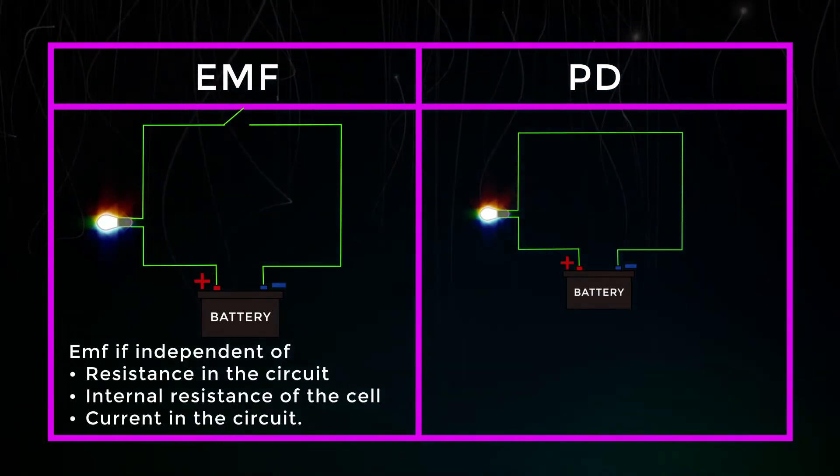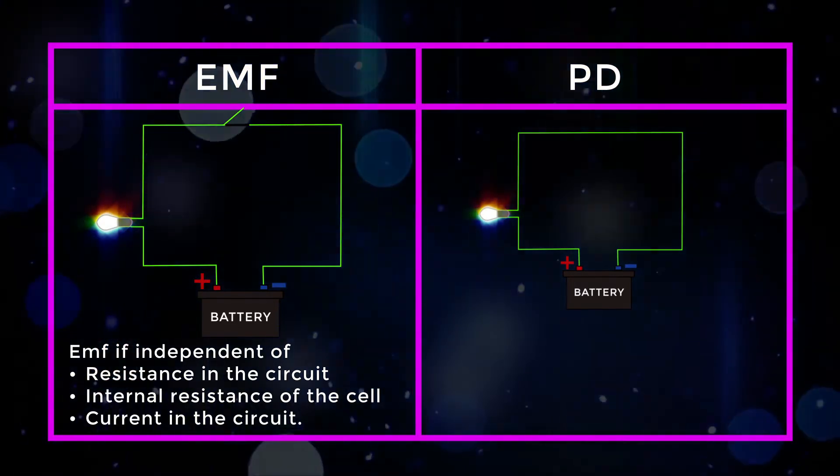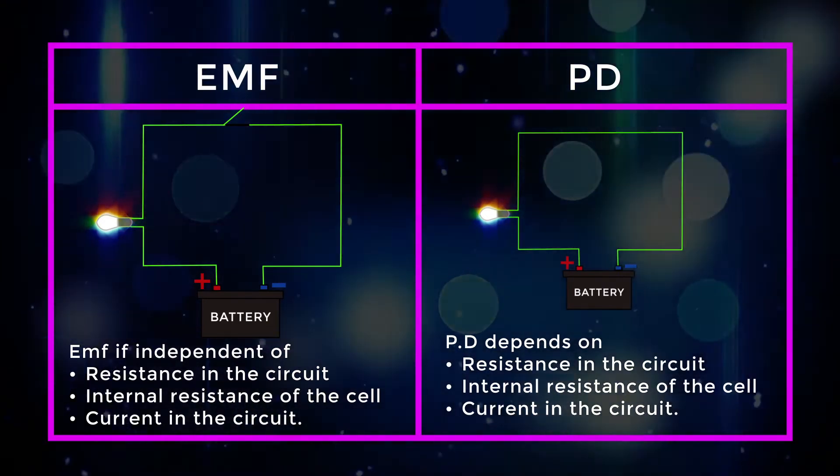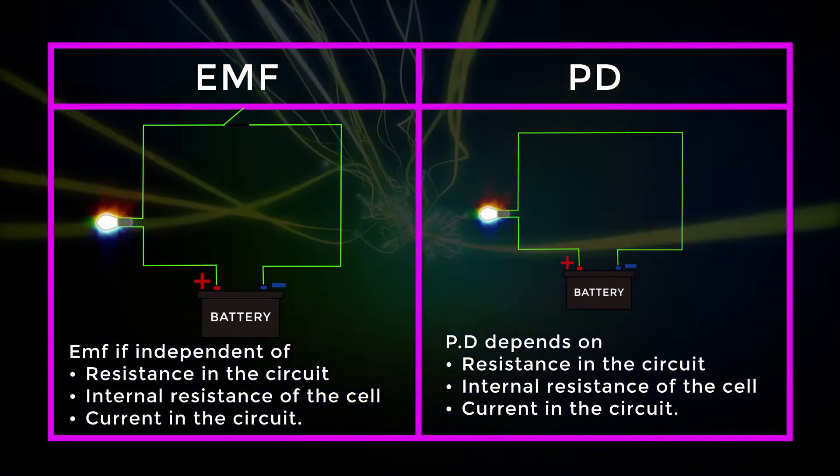EMF is independent of resistance in the circuit, internal resistance of the cell, and current in the circuit. Whereas PD depends on resistance in the circuit, internal resistance of the cell, and current in the circuit.